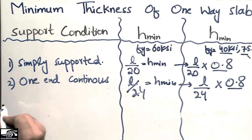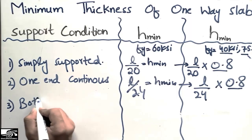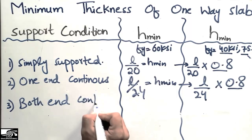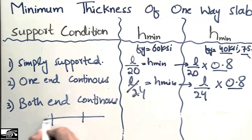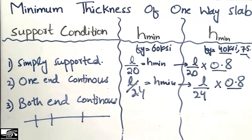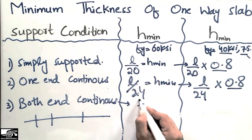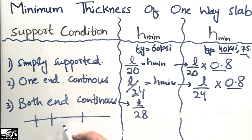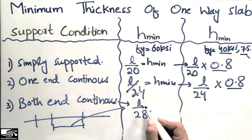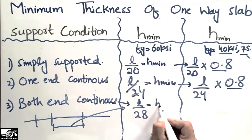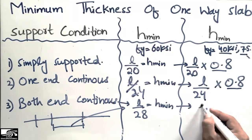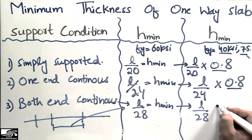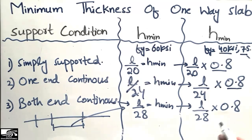The third type is the both ends continuous slab, in which both ends are continuous. In this case the minimum depth or minimum thickness of the slab is l/28. Dividing the length l by 28 gives the minimum thickness. For steel other than grade 60, multiply by the factor — for grade 40 this factor is 0.8.